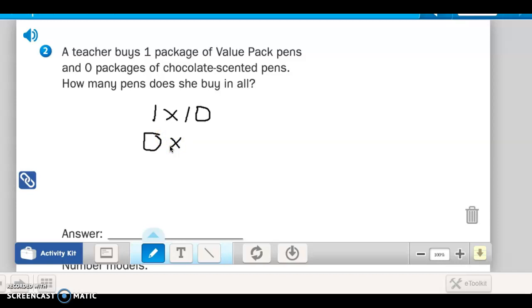And she buys zero packages of the chocolate scented pens, which is six, six in a pack. So how many pens does she buy in all? Well, we talked about earlier that anything times one is ten, and we talked about earlier that anything times zero is zero. So this is zero. So ten plus zero is what? Ten.